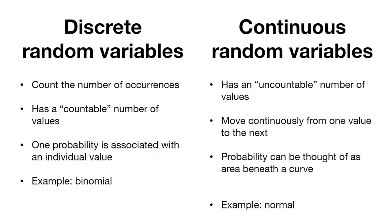We also have continuous random variables. Here there are an uncountable number of values. The values are continuous throughout some space. We can think about the probability as beneath a curve.